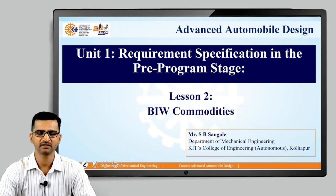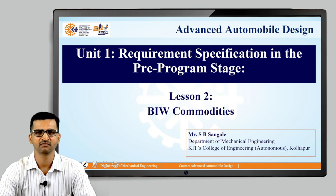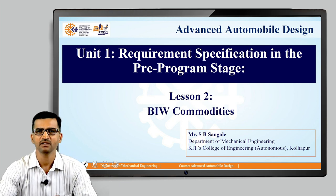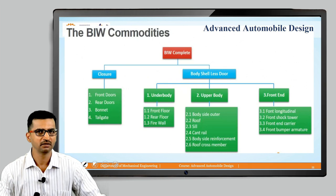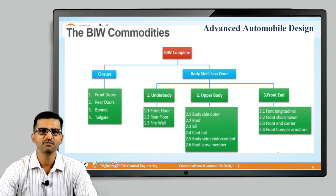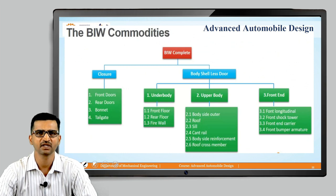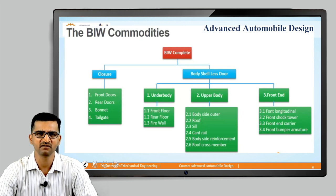Hello students, welcome back. In the last lesson we discussed what is BIW. Right now we are going to discuss various BIW commodities. The complete BIW can be classified under these sub elements. One is closure and the remaining is body shell less door. Why less door? Because doors are already accounted for in closures.